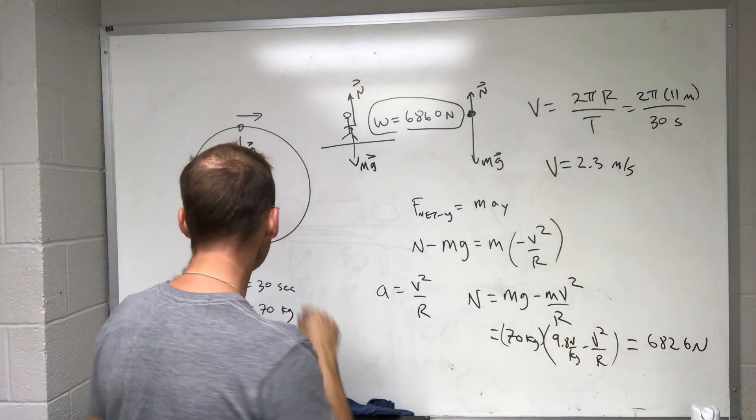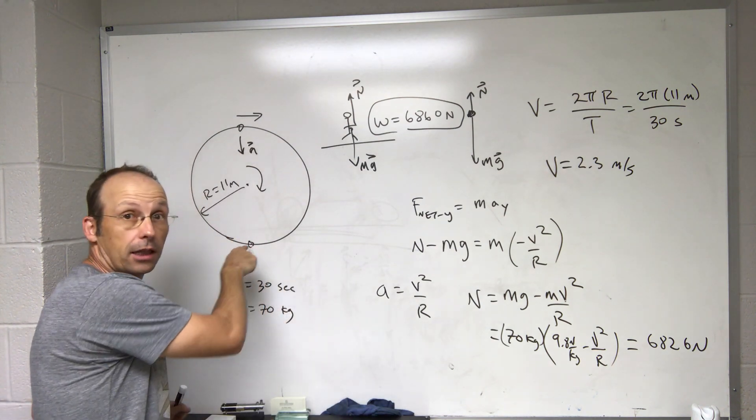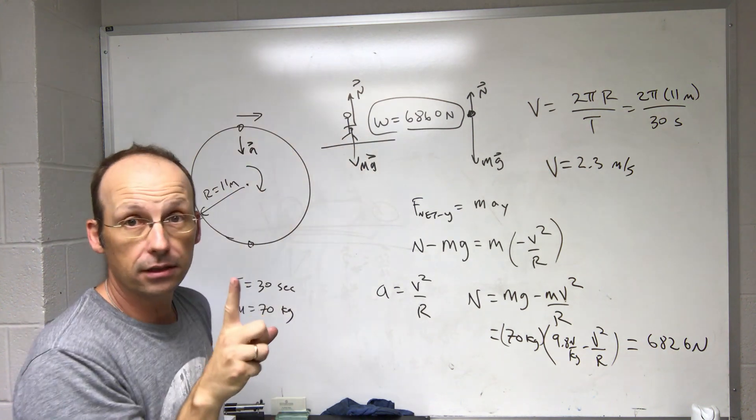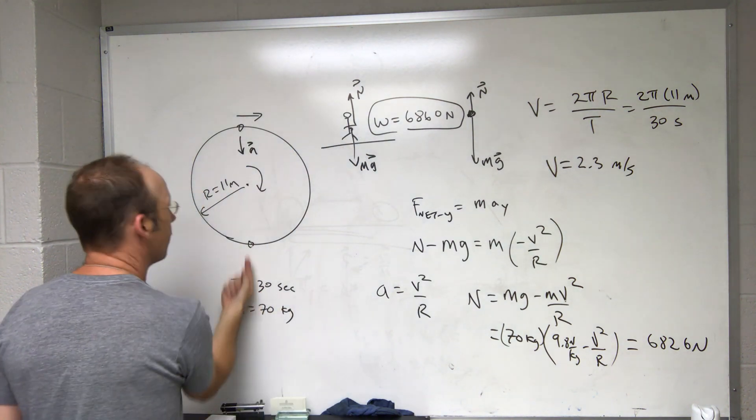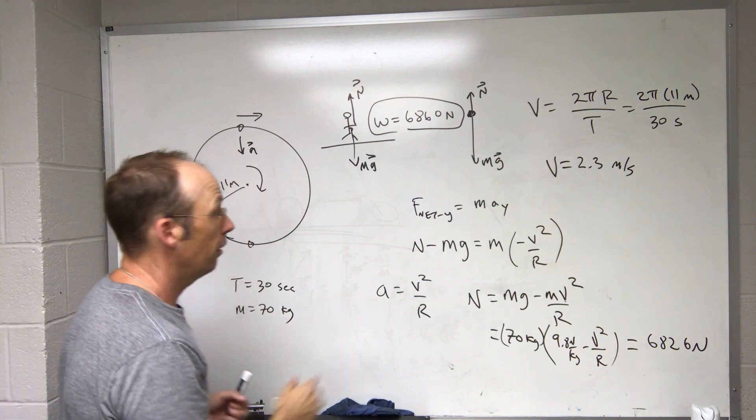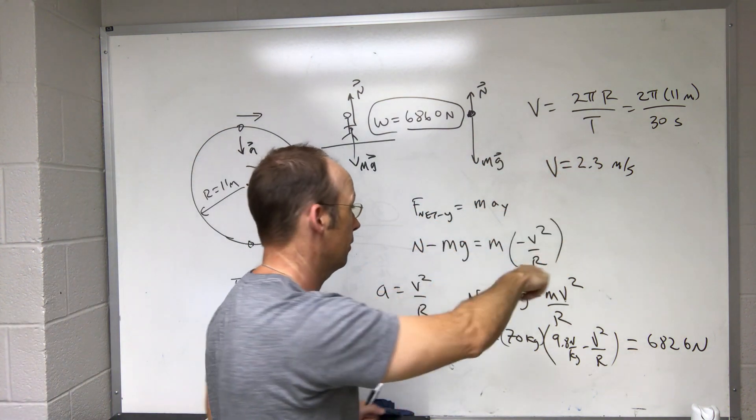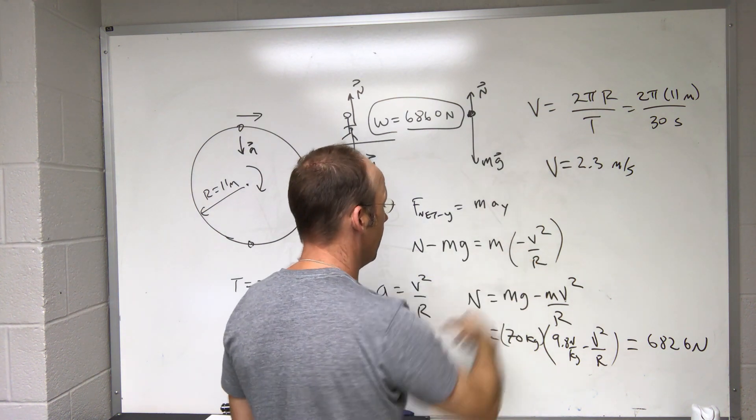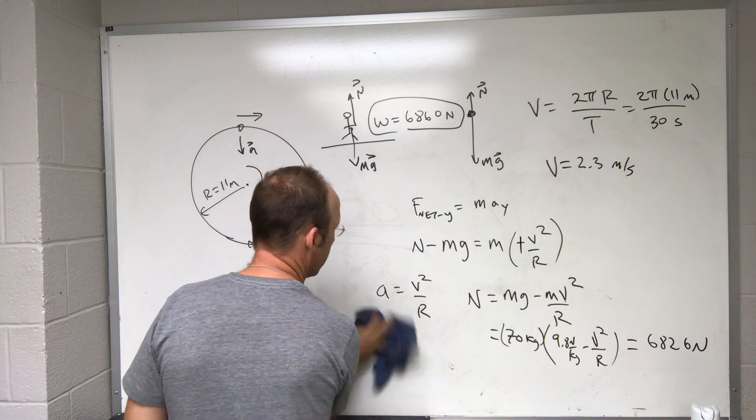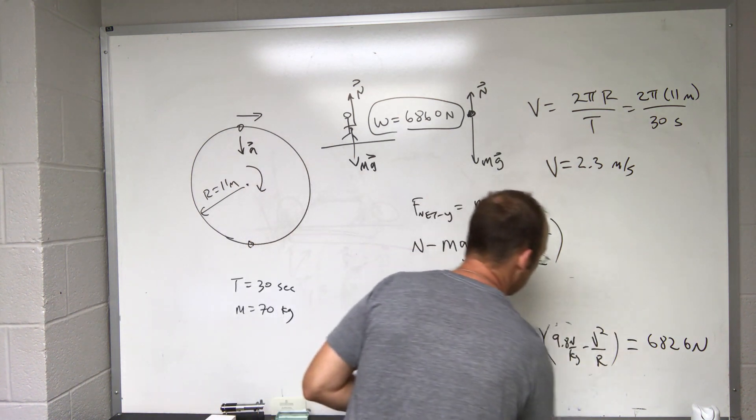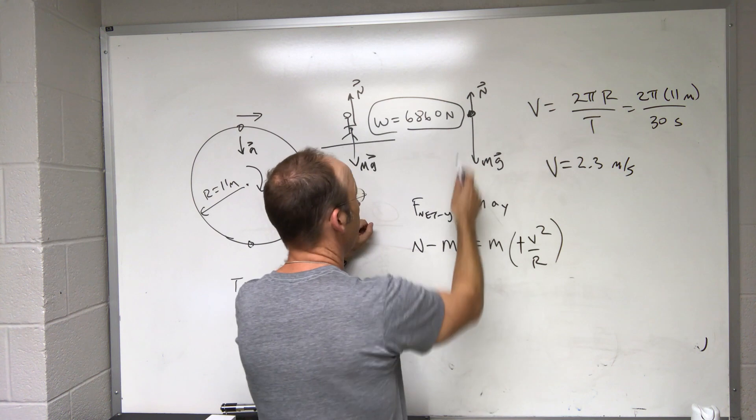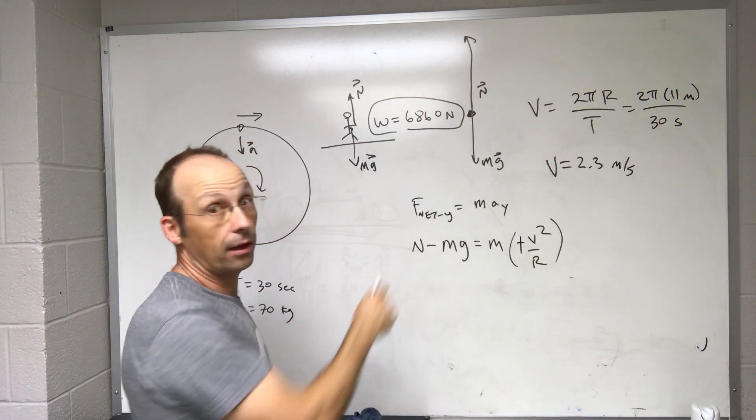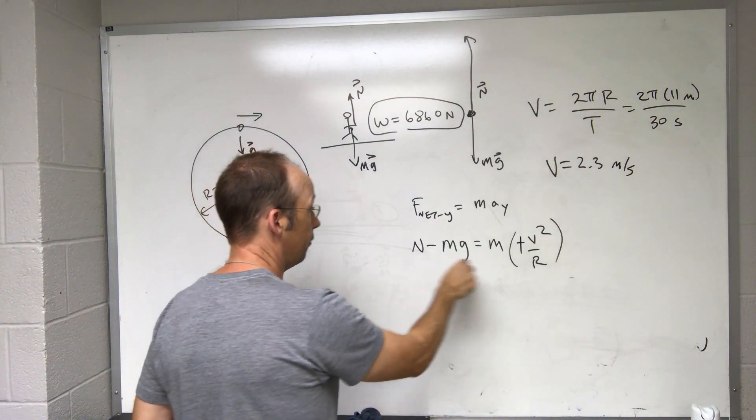Okay, but now let's do the problem. What's different at the bottom? At the bottom of the Ferris wheel, I still have the same forces, but what changes is the direction of the acceleration. Now I'm accelerating up instead of down. So everything's the same except this. It's no longer accelerating in the negative direction. It's in the positive direction. So in order to accelerate up, the normal force is going to be greater than the weight.